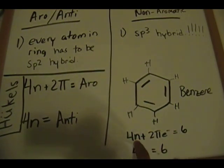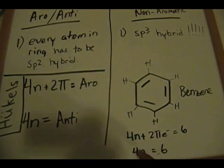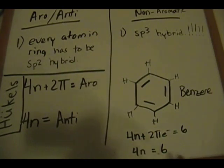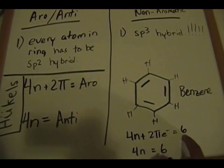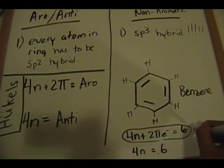If you plug in 0 for n: 4×0 + 2 = 2, which does not equal 6. If you plug in 1: 4×1 + 2 = 6 — that works. We are able to plug in a whole number that gives a value of 6, and since this matches the 4n + 2 formula, this benzene ring is aromatic.